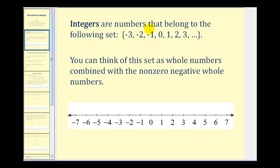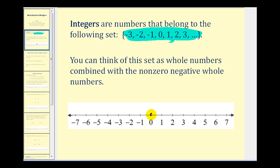Integers are the numbers that belong to the following set. You can think of this set as whole numbers combined with the non-zero negative whole numbers. Remember, the whole numbers are zero, one, two, three, four, and so on.